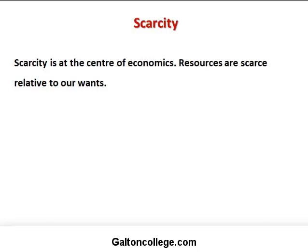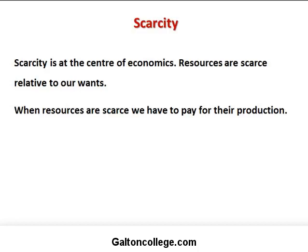We live on a small planet that circles the sun. It has finite resources — the only resources we have are on the planet. So resources are scarce relative to our wants. When resources are scarce we have to pay for their production — this is where the whole economic system really starts. It starts as this interplay between our wants and the scarce resources available. We have to pay to satisfy our wants, pay for processing raw materials, and pay for extraction from the earth.